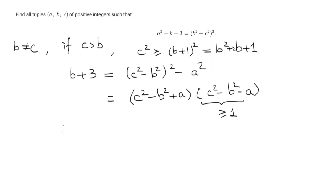This implies that b + 3 is larger than or equal to c² - b² + a, which is larger or equal to 2b + 1 + a. A simple rewriting shows that this is equivalent to 2 > b + a, which is equivalent to saying a = b = 1.